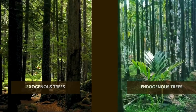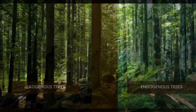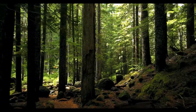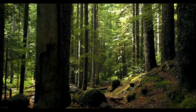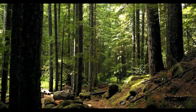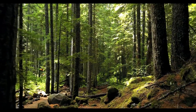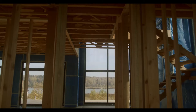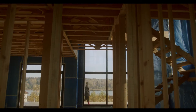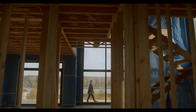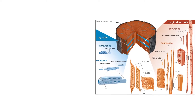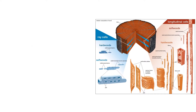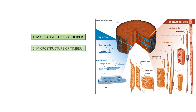Timber can be obtained from exogenous and endogenous trees. Exogenous trees are most used in structural applications and have more visibility of internal structure. Hence, we use the cross section of an exogenous tree to describe the component parts of the timber layer for this tutorial. From the visibility aspect, the structure of a timber or wood can be divided into macrostructure and microstructure.